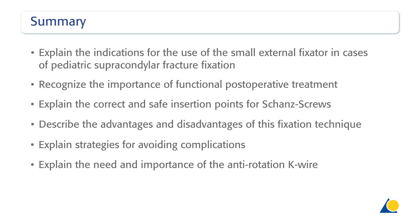You should now be able to: explain the indications for the use of the small external fixator in cases of paediatric supracondylar fracture fixation; recognise the importance of functional post-operative treatment; explain the correct and safe insertion points for shunt's screws; describe the advantages and disadvantages of this fixation technique; explain strategies for avoiding complications; and explain the need and importance of the anti-rotation K-wire.